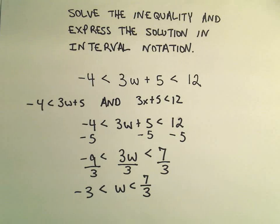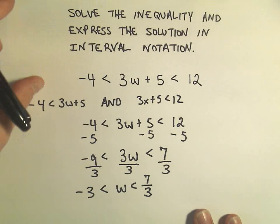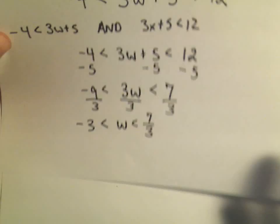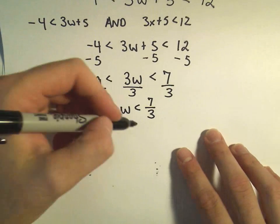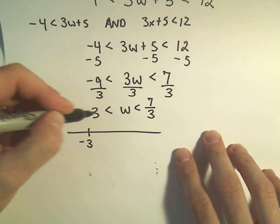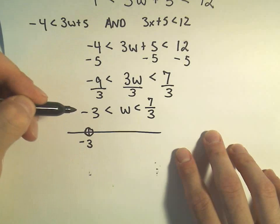So basically it says the numbers that work - w has to be strictly greater than -3, but less than 7 thirds. So if we want to write that, I'm going to make my little number line. I always like to do that first. So -3, we don't use it, so we make an open circle.